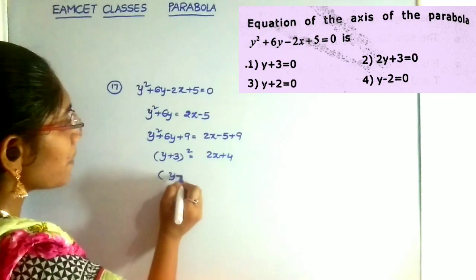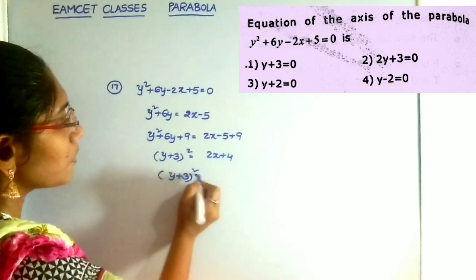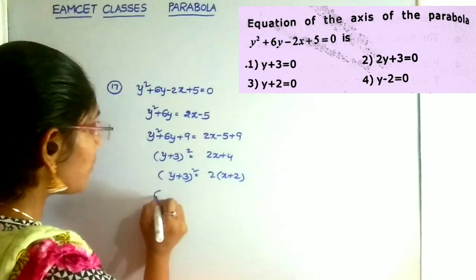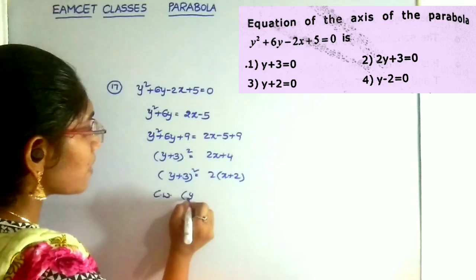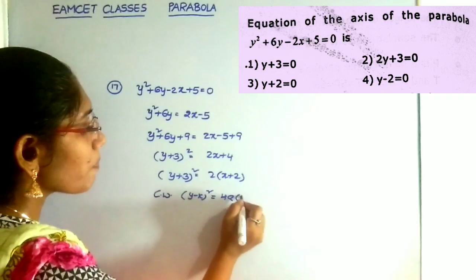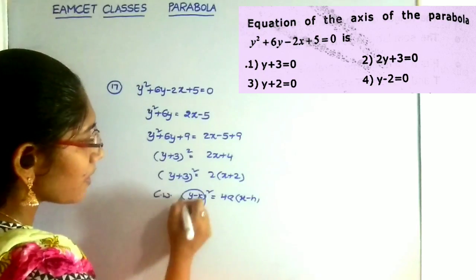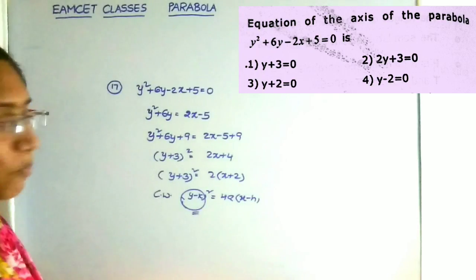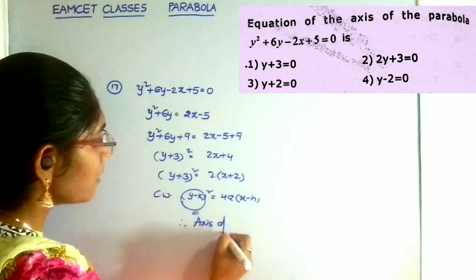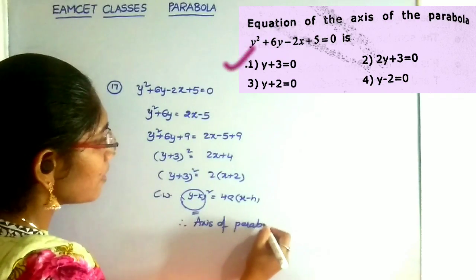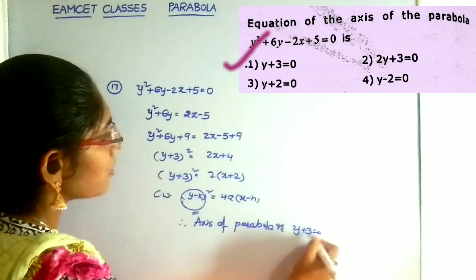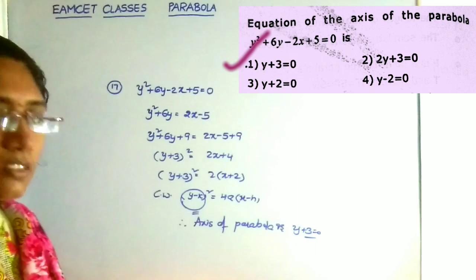So this becomes y plus 3 whole square is equal to 3x plus 4, that is y plus 3 whole square is equal to 3 into x plus 2. Clearly this is in the form of y minus k whole square is equal to 4a into x minus h. Therefore, the axis of the parabola is y plus 3 is equal to 0. This is the answer and that is the first option.